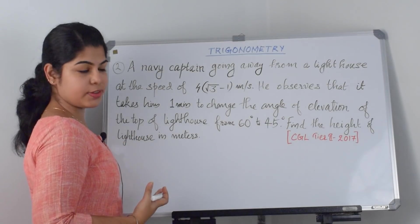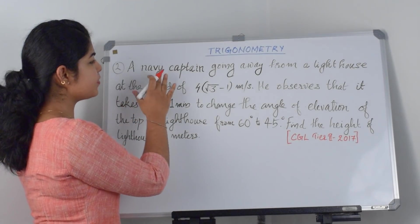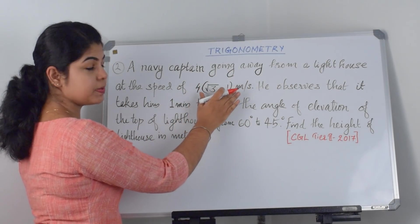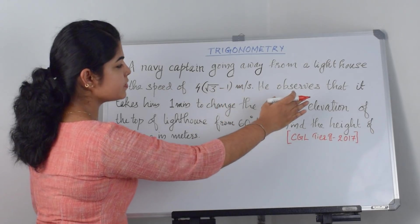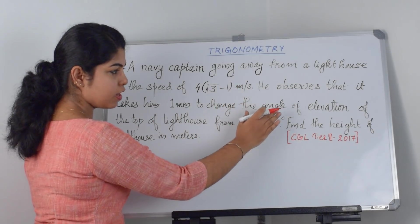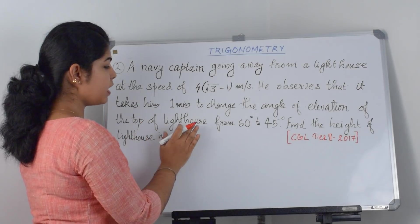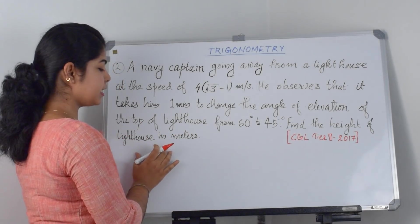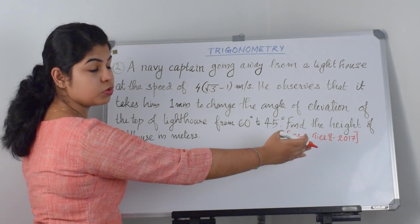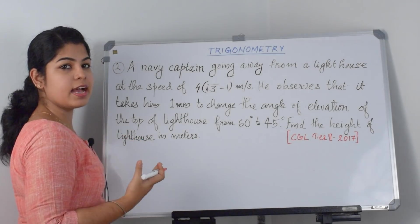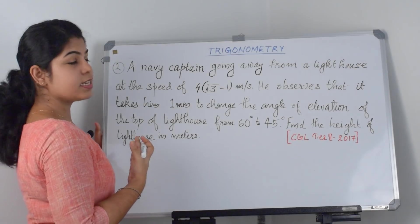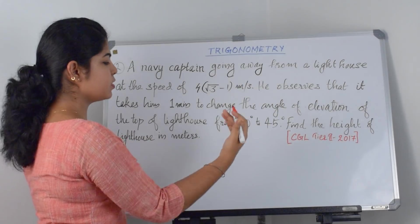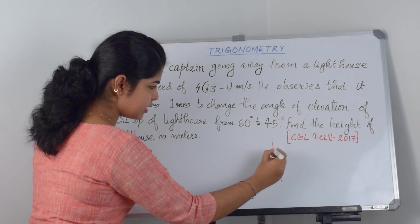Let us solve our second question. A navy captain is going away from a lighthouse at a speed of 4 times root 3 minus 1 meters per second. He observes that it takes him 1 minute to change the angle of elevation of the top of the lighthouse from 60 degrees to 45 degrees. Find the height of the lighthouse in meters. This is a CGL Tier 2 2017 question. First I am going to draw the figure. I am drawing a lighthouse as AB.